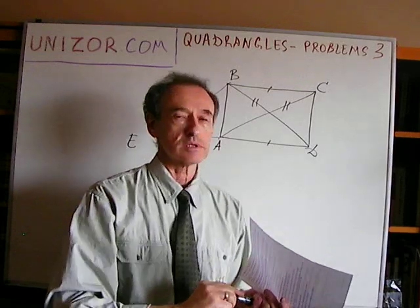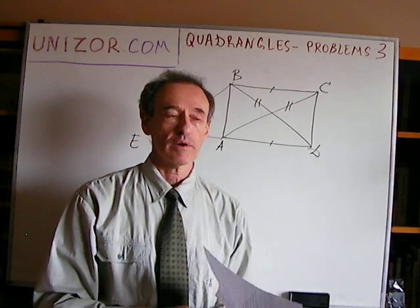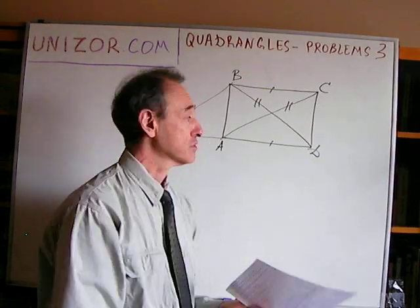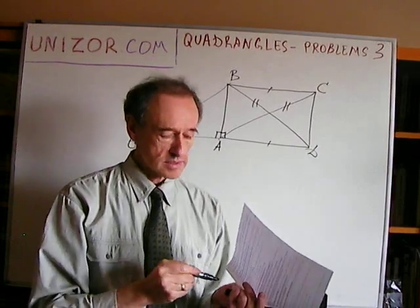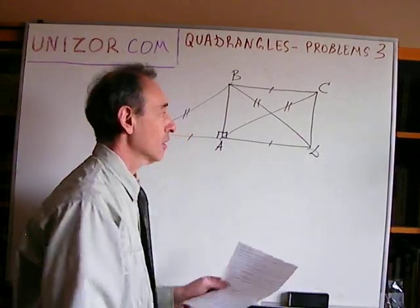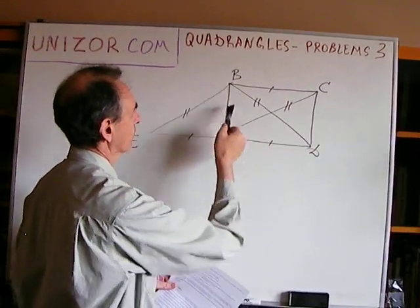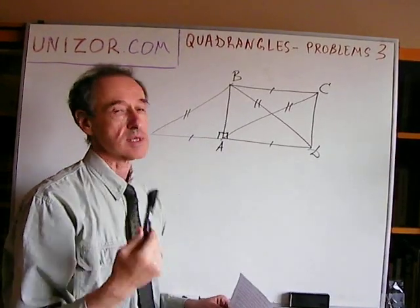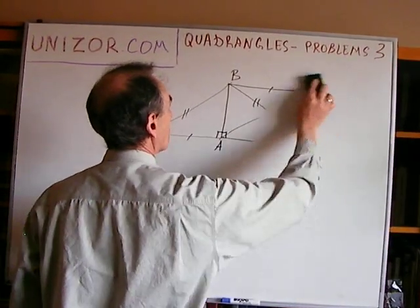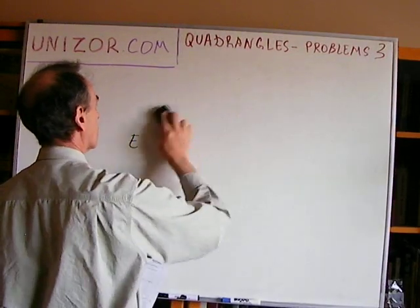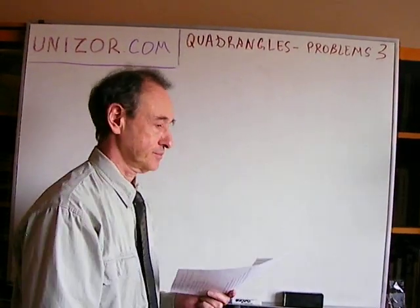In an isosceles triangle, the median from the top to the base coincides with the angle bisector and the altitude — that's why this angle is 90 degrees. So this angle is 90 degrees, which means we have a parallelogram with a 90-degree internal angle. Since opposite angles are congruent and neighboring angles are supplementary, all angles are 90 degrees — making it a rectangle by definition.